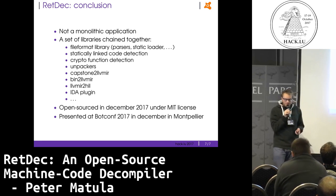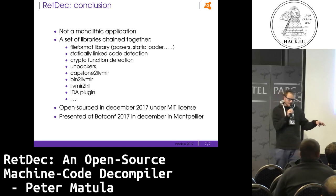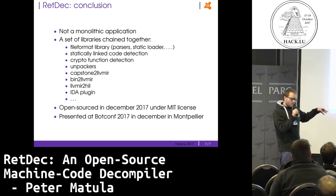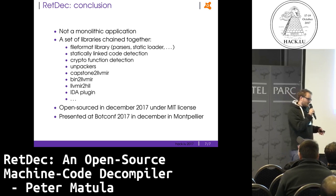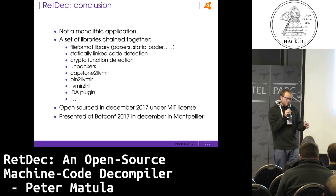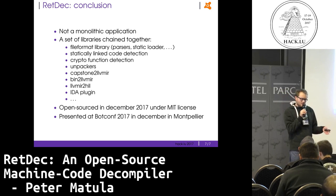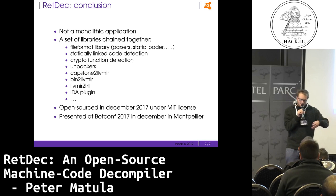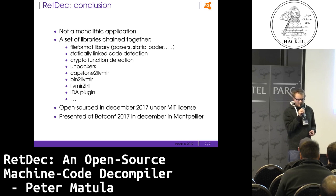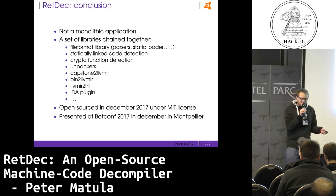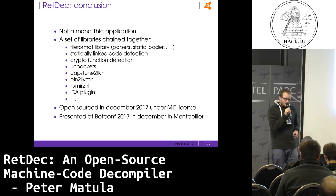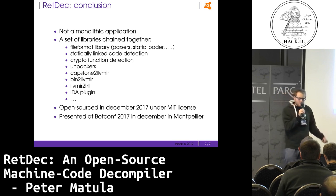All those little boxes in the pictures were libraries. Our decompiler is not a monolithic tool like IDA — it is just a collection of libraries linked together by some scripts. When we open source it, all these libraries will be in separate GitHub repositories and you don't have to use the entire compiler. Maybe you will just be interested in the loader, or for example just the Capstone-to-LLVM library. All those libraries are somehow standalone and can be used separately.